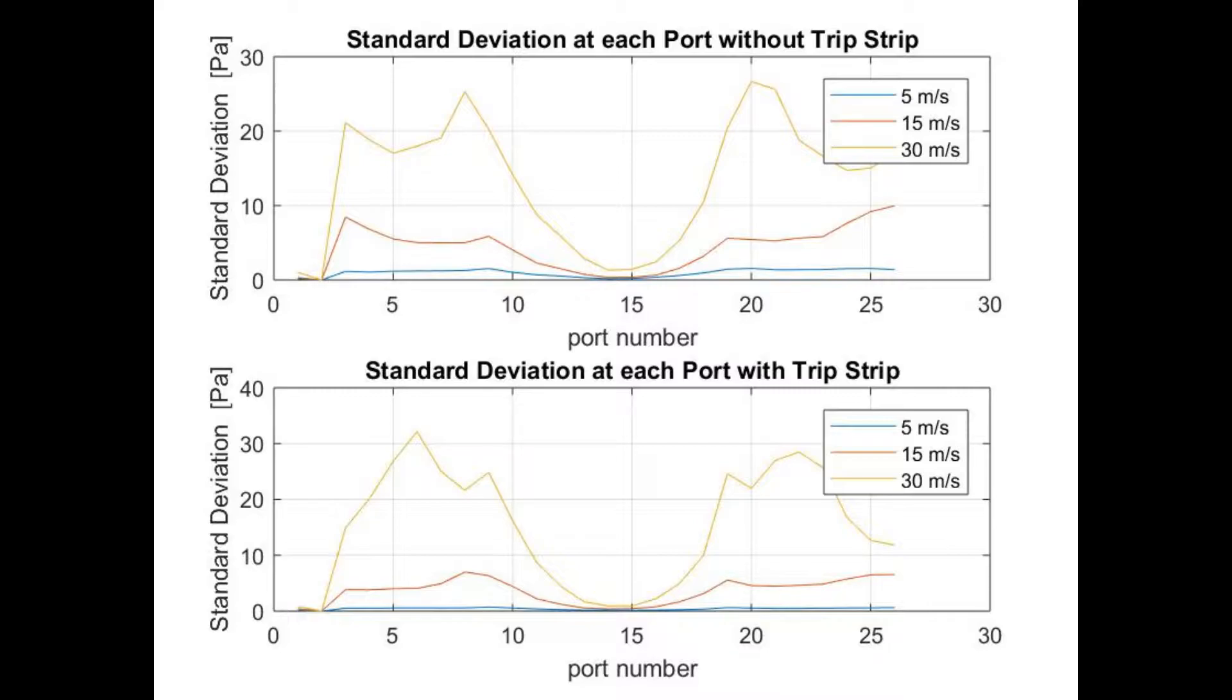At low speeds, the flow stayed attached and laminar, while at higher speeds the flow detached and became turbulent. This causes a fluctuating region of high and low pressure and large variations in the recorded pressure. If our data sampling frequency was equal to the flapping frequency, we would have observed a low standard deviation at all points.